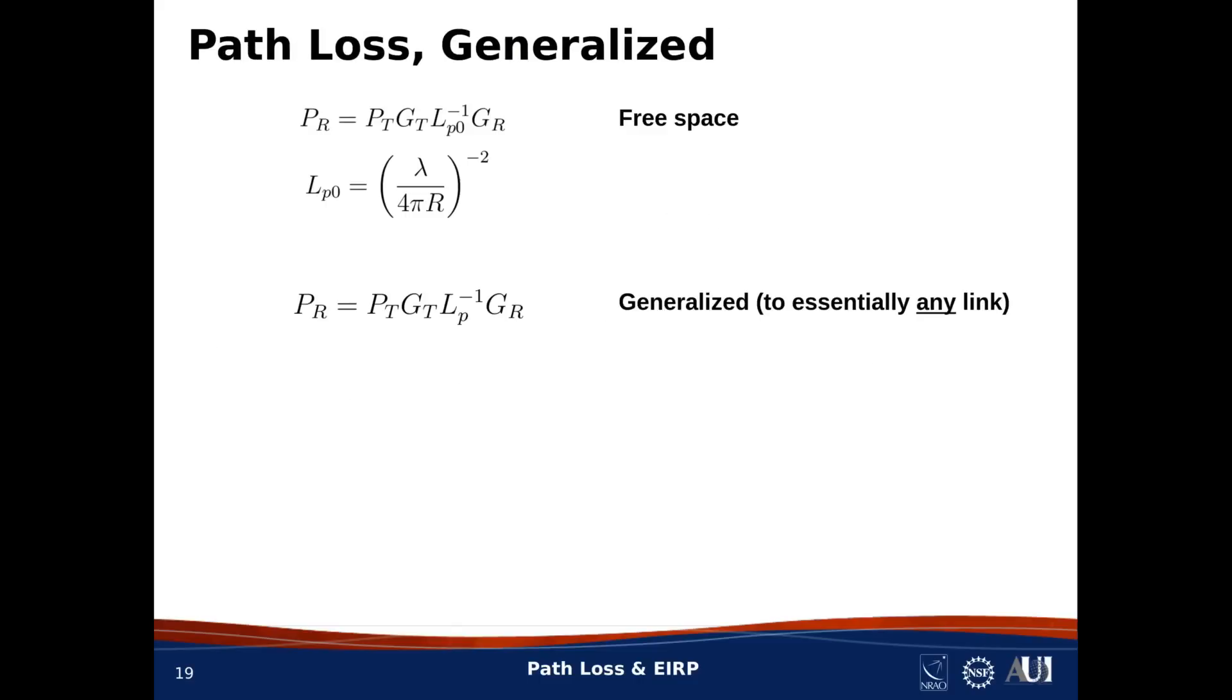Now, another nice thing about the Friis equation is that it generalizes in a convenient way from free space to more complicated propagation environments. All you need to do is come up with the appropriate replacement expression for the path loss, and everything else can stay the same. So, let's continue to refer to L sub P0 as the free space path loss, and we'll refer to L sub P, that is, without the 0, to refer to the generalized path loss.